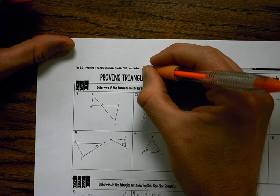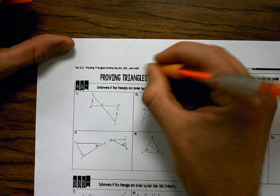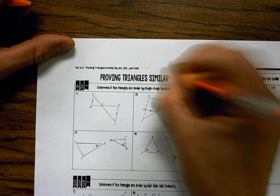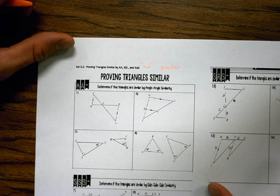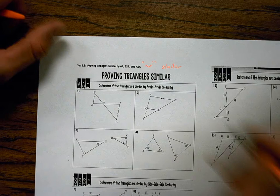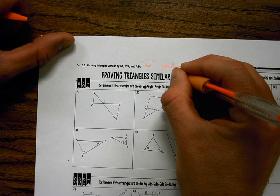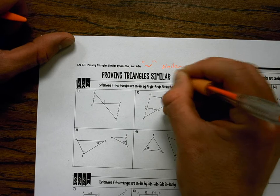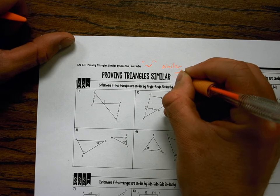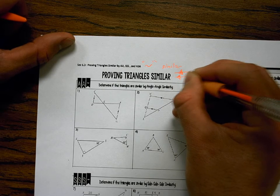Alright, first thing we need to go over. What does this symbol mean? Similar. Similar. Okay. What does it mean when I have an arrow on a line and another arrow on another line? Those lines are parallel.